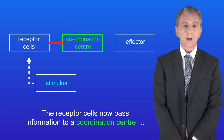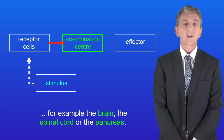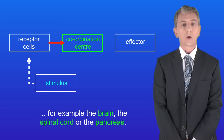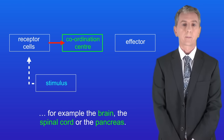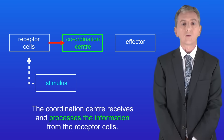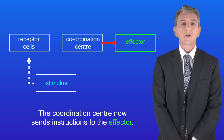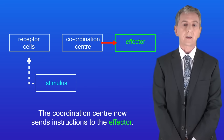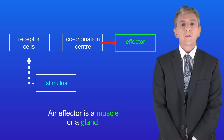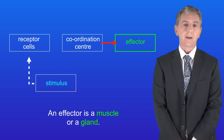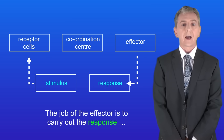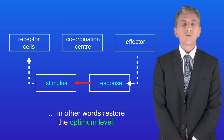The receptor cells pass information to a coordination centre — for example the brain, the spinal cord, or the pancreas. The coordination centre receives and processes the information from the receptor cells, then sends instructions to the effector. An effector is a muscle or a gland, and the job of the effector is to carry out the response — in other words, restore the optimum level.